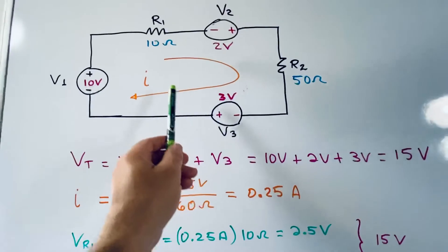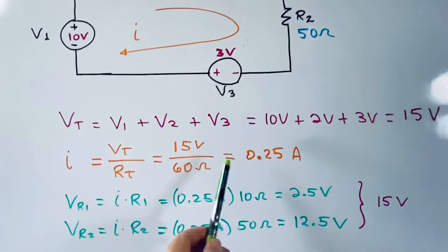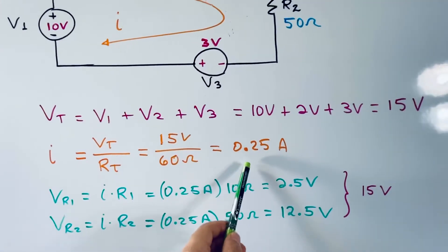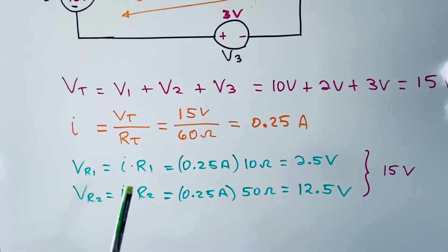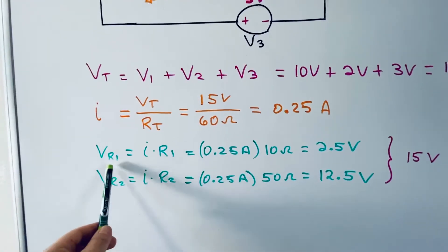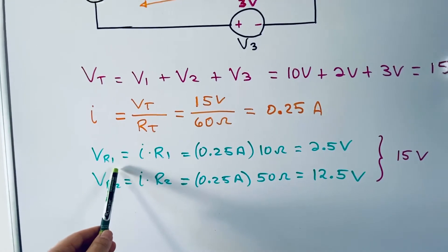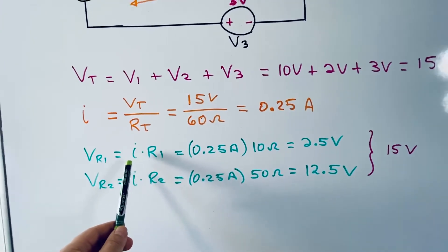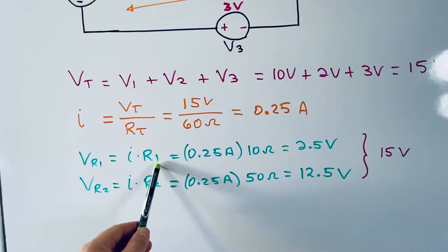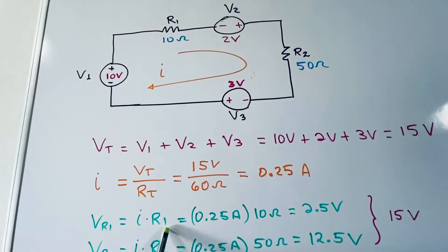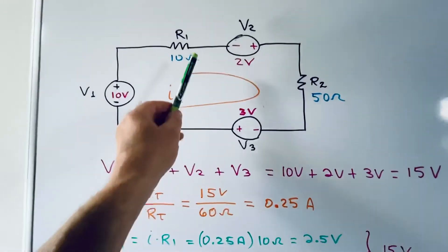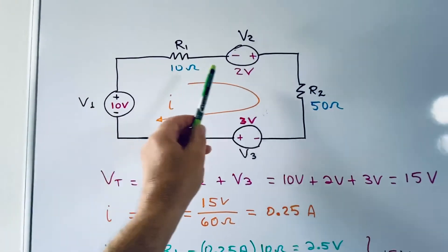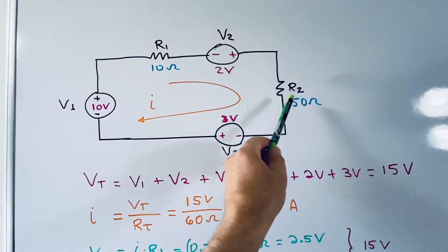Now VR1, the voltage across resistor 1 or the voltage drop across resistor 1, is equal to IR. In this case, the first resistor I times R1, as you can see there. I times R1. The voltage here is the current times the second resistor.